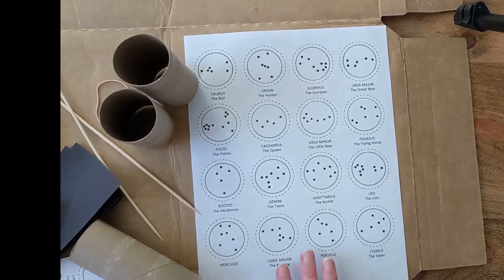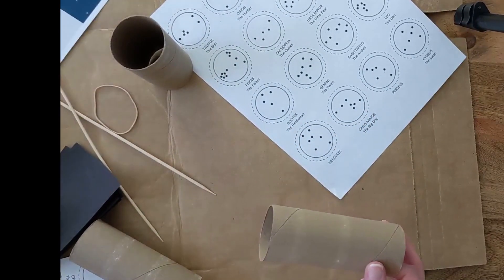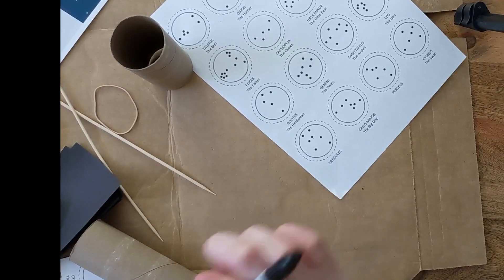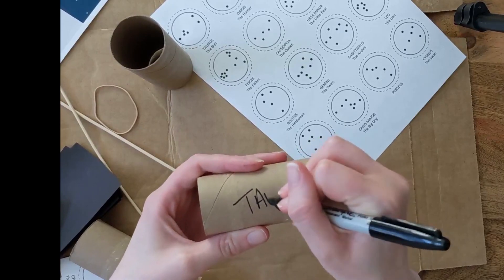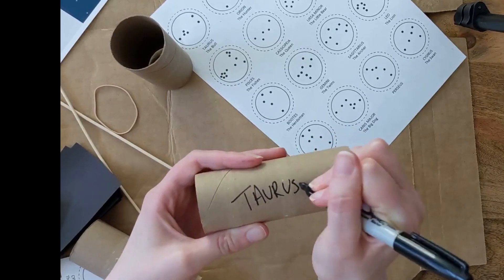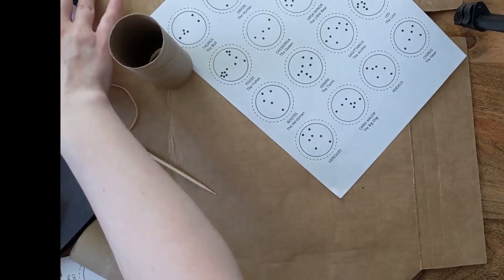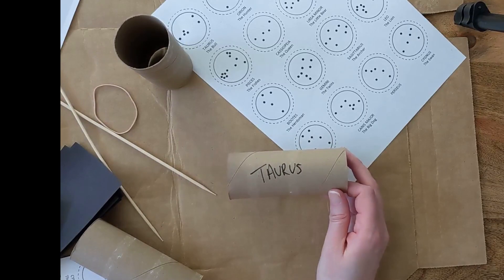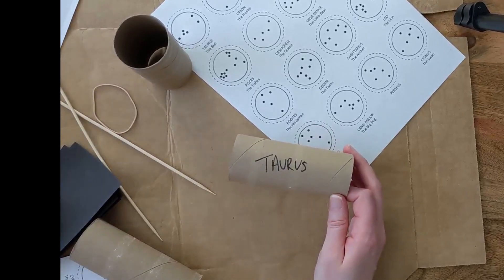The first thing we're going to want to do is decorate our paper tube. You can decorate however you want. I am just going to label mine with the constellation that I am going to use. I'm choosing this one because I am a Taurus so that would be a fun one to do. You can decorate however you want. If you've got washi tape, if you want to put scrapbook paper on it, googly eyes, feathers, however you want it to look, it's great.